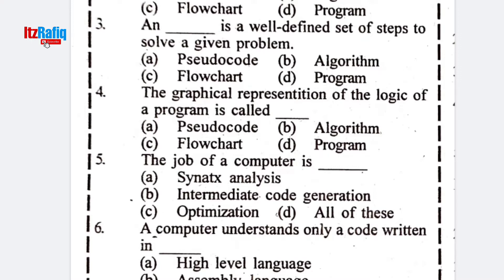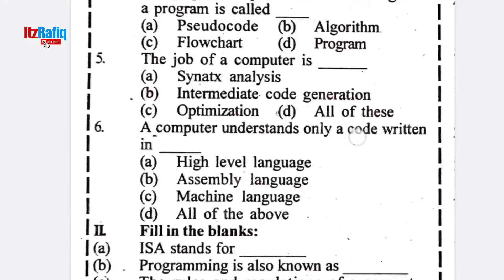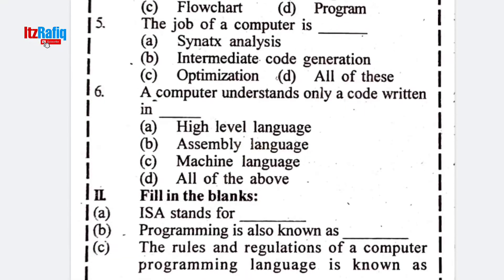The graphical representation of the logic of a program is a flowchart. The job of a compiler — it should be compiler, not computer — is to convert code. A computer understands only code written in machine language; it does not understand code in other forms, so we must convert it to machine level.